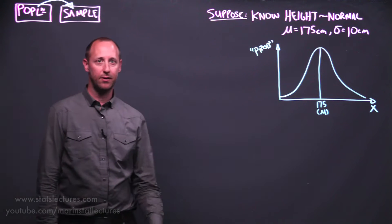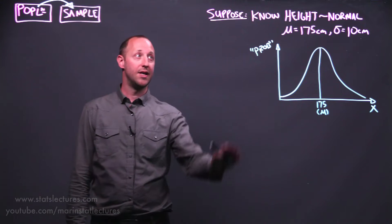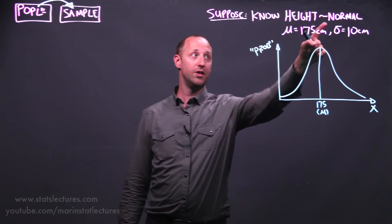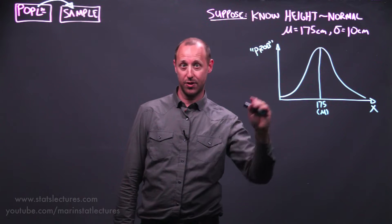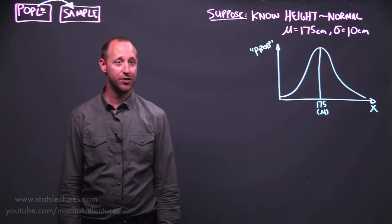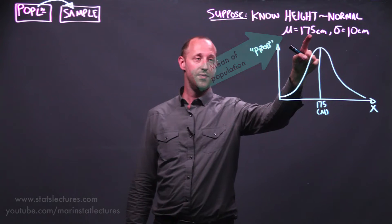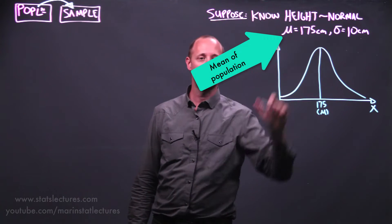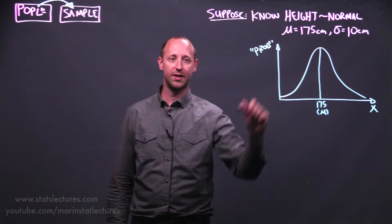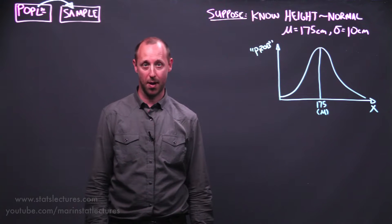So we're going to take this example here. Let's live in the pretend world and suppose that we know that the heights of an entire population are normally distributed, meaning they have a distribution, a histogram of heights that is bell-shaped and perfectly symmetric about its mean, and we know that the mean is 175 centimeters and the standard deviation is 10 centimeters. In other words, we know that the distribution of heights looks like this in the population.